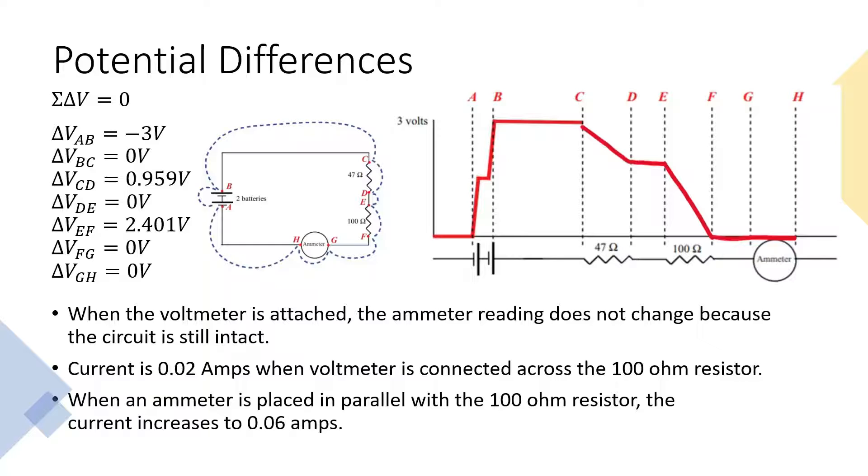The ammeter reads 0.02 amps when the voltmeter is connected across the 100 ohm resistor. When an ammeter is placed in parallel with the 100 ohm resistor, the current increases to 0.06 amps because it is split between the two parallel paths. The current wants to travel through the path of the ammeter since it has no resistance in this simulation, making the 47 ohm resistor the only resistor that is applied on the current.